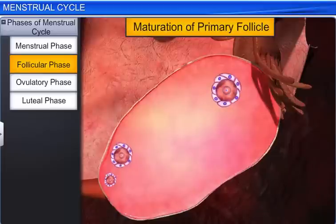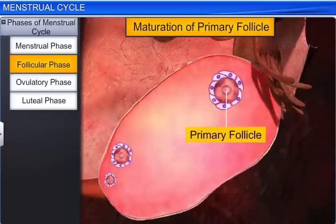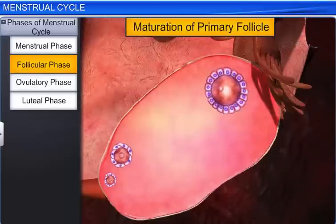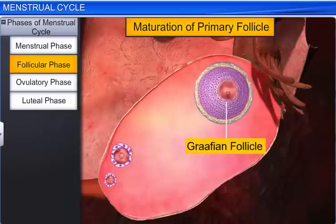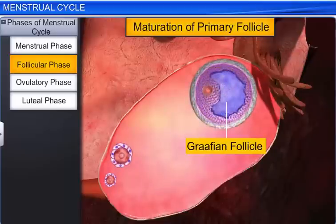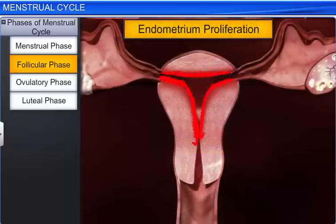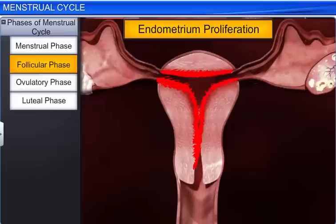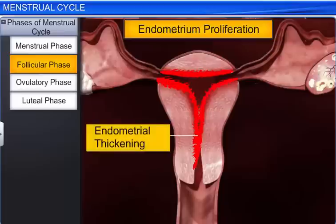During this phase, the primary follicle in the ovary matures into a Graafian follicle. Simultaneously, the endometrium undergoes proliferation — a process of regeneration — which results in the formation of a new, thick endometrium.